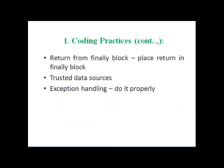Check for return statements: your return statement should be present in all functions. Whenever you call a function, it should return some value; if there is no value to return, return zero. Return from the finally block: the finally block is the last block of your exception handling. The try block catches the exception, throws it to the catch block, the catch block handles it, and then control moves to the finally block.